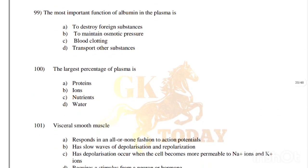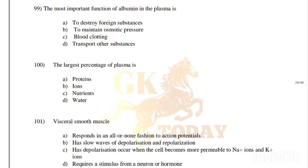The most important function of albumin in the plasma is: to destroy foreign substances, to maintain osmotic pressure, blood clotting, or to transport other substances. Correct answer is option B, to maintain osmotic pressure.